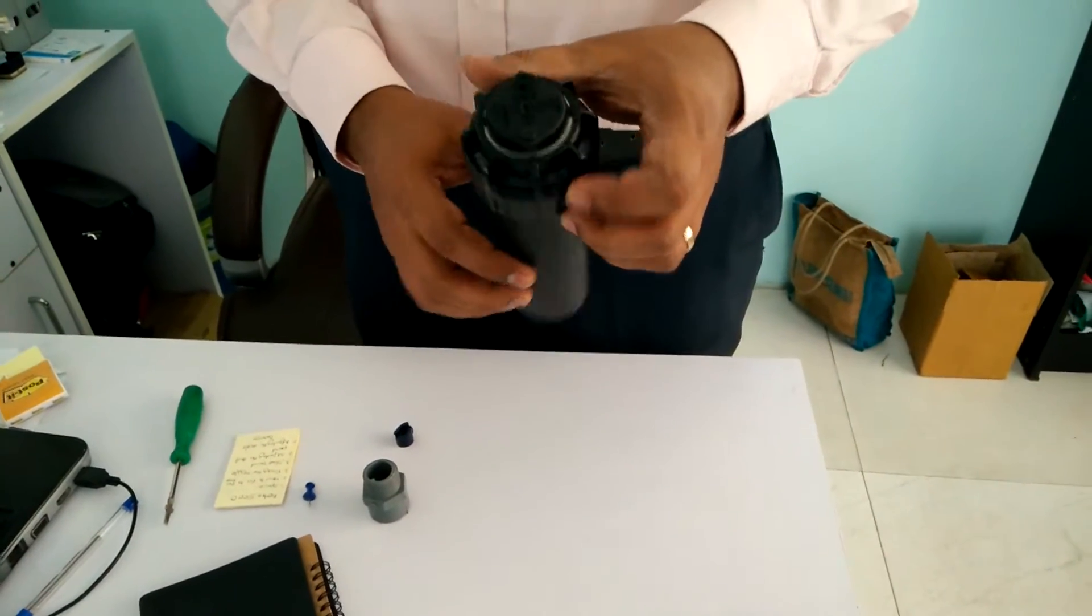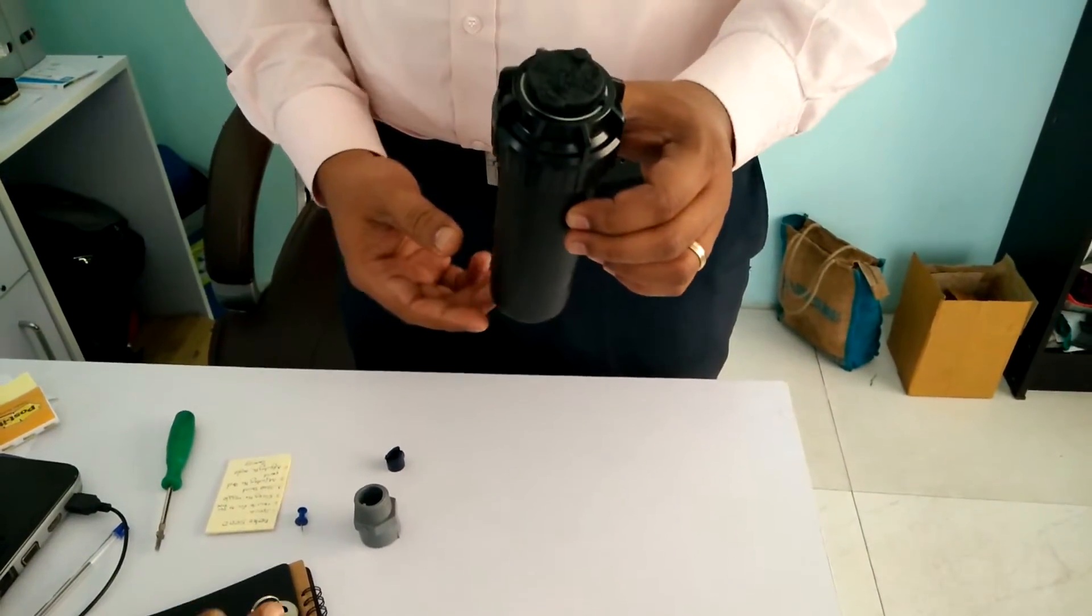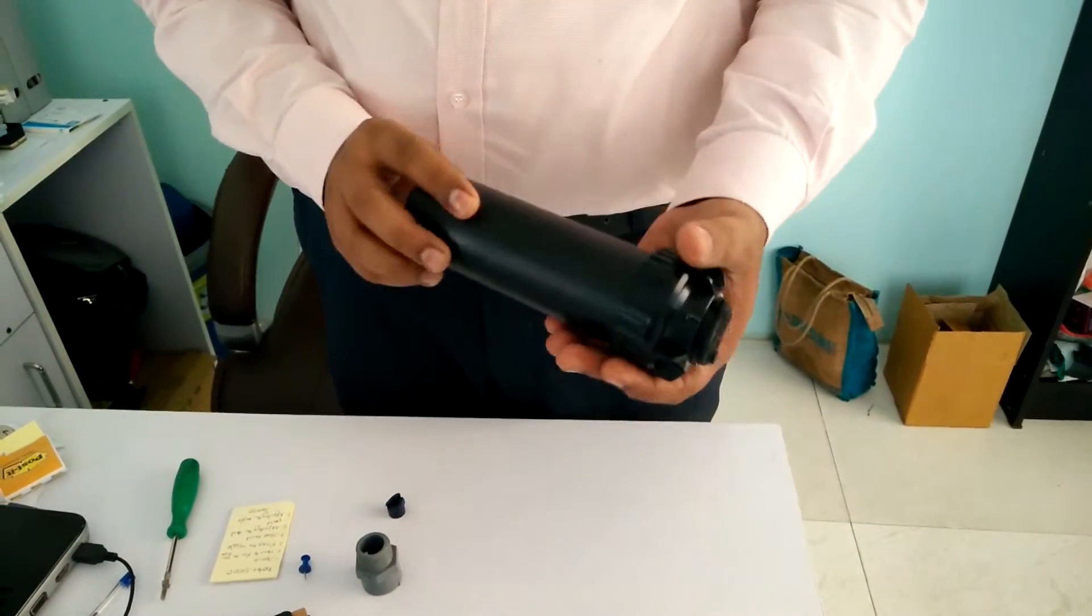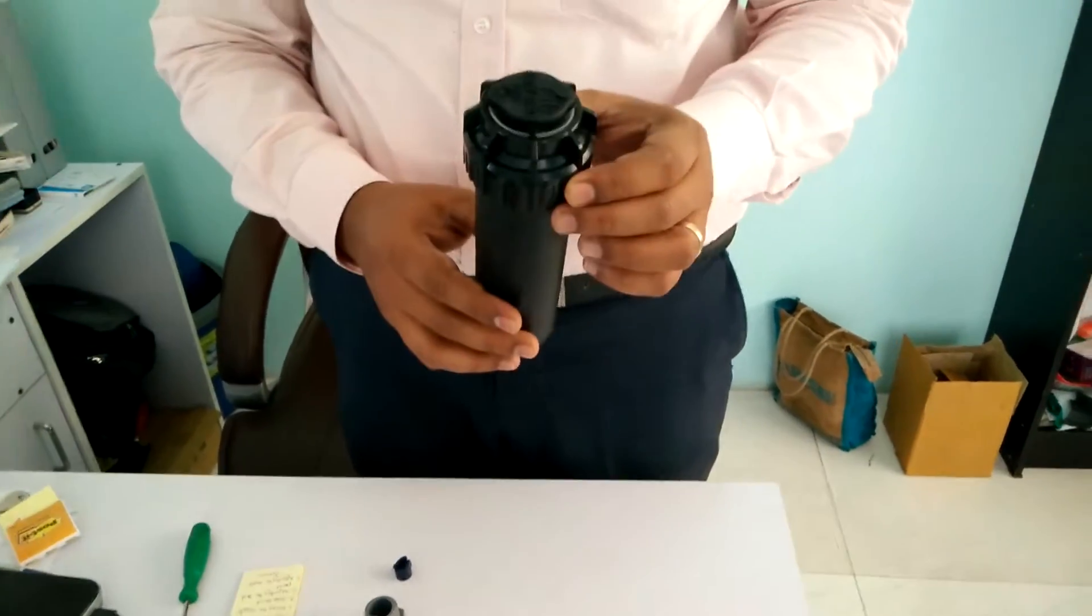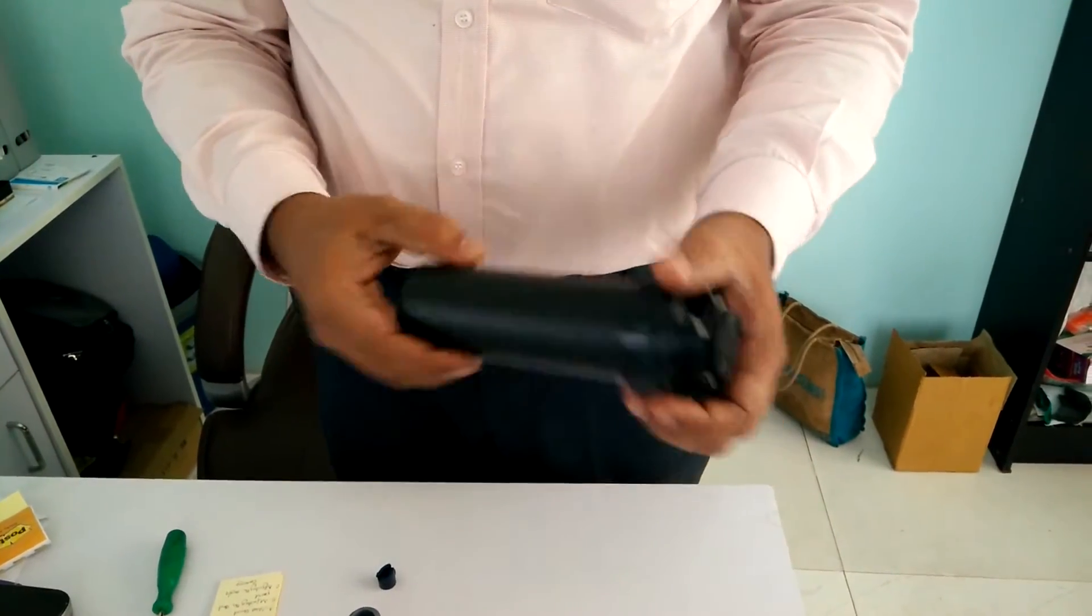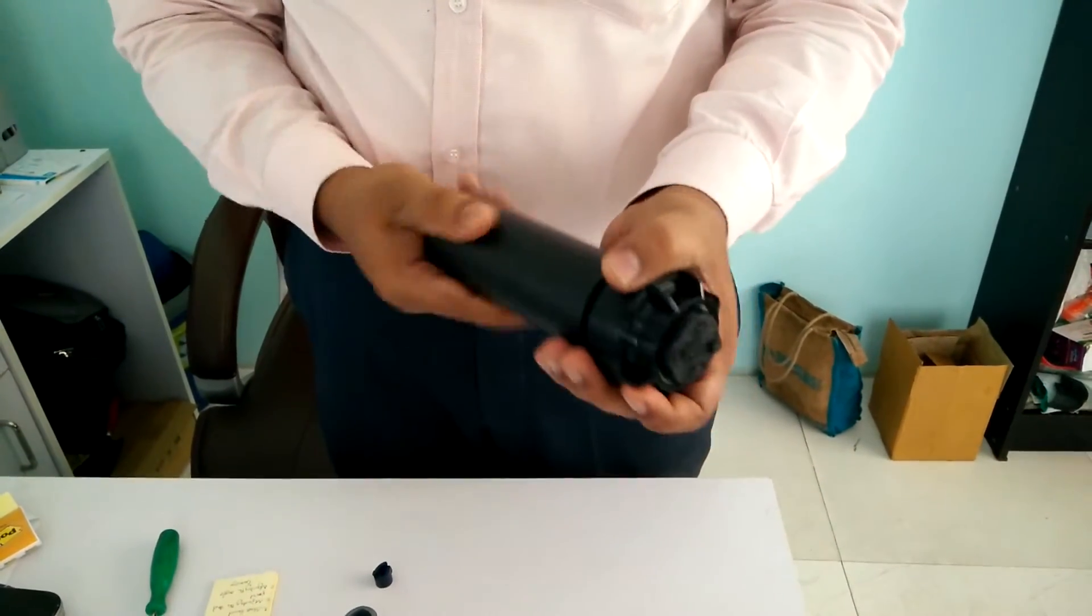I am going to show Rainbird Phythosin series rotator. The basic specification of the Rainbird Phythosin series: this is the body of the Rainbird Phythosin series. It is having two parts, one is the outer body and another is the pop-up body.